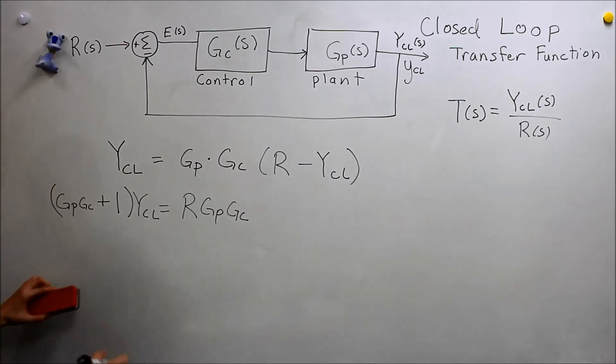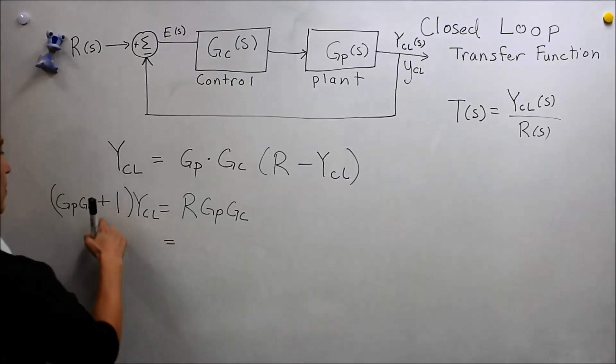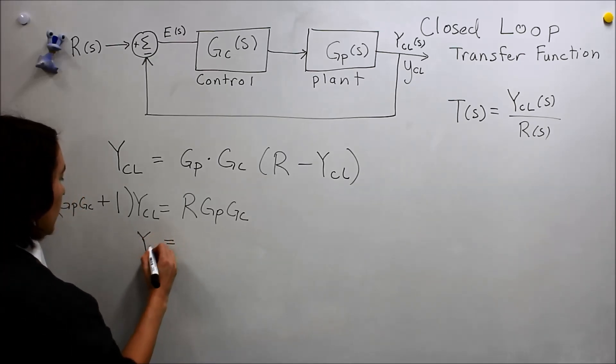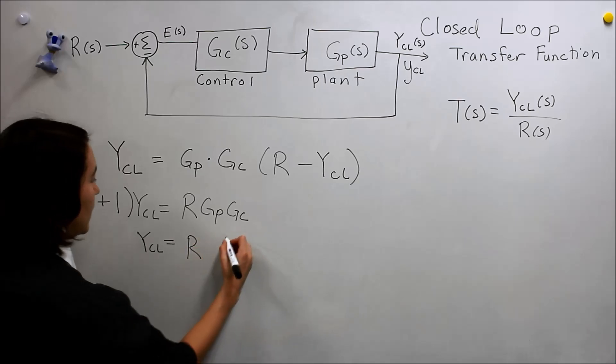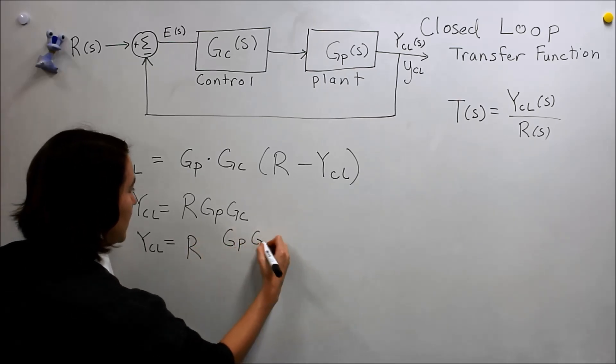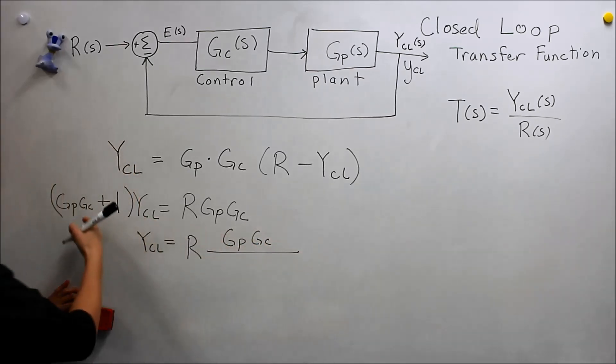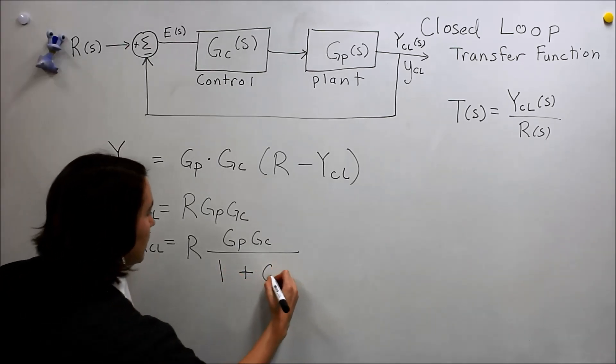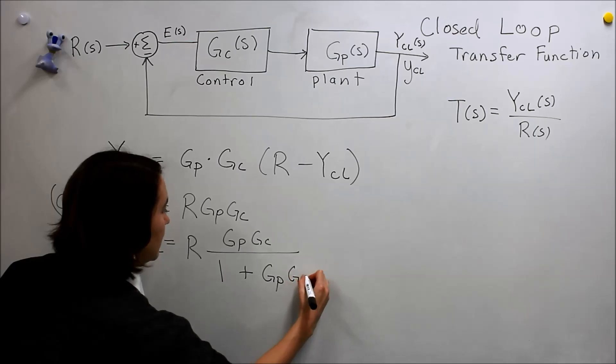So this is pretty easy. We know how to do this. We want to move this to the denominator over here. So we'll get y_cl is equal to R, G_p, G_c, divided by 1 plus G_p, G_c.